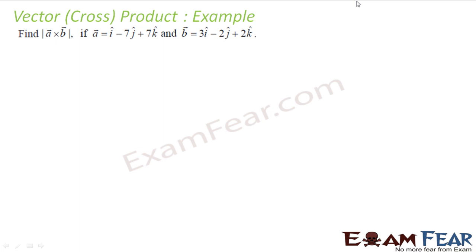So here we have two vectors A and B given. We have to find the magnitude of A cross B, and this will be scalar, obviously. So I'll show you how.